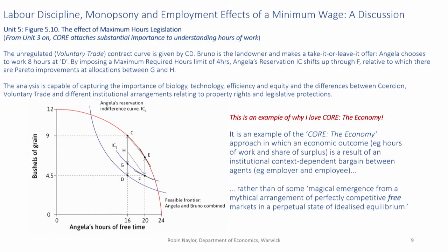The second remark is to remind us that hours of work are an important part of the first units of the CORE economy. Unit 3, looking at decision making and choices and indifference curves — essentially the antecedents of isoprofit curves — focuses on hours of work outcomes. That builds up into Unit 5 on Bruno as the landowner and Angela as the farmer and hours decisions under various scenarios.